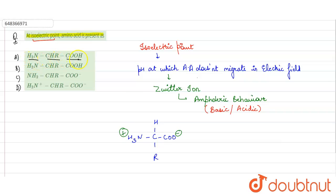The option is H2N-CHR-COOH. This option is showing that carboxylic acid and amino group is present, but there is no charge. That's why it is wrong option.